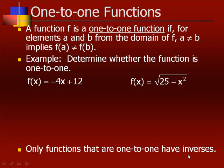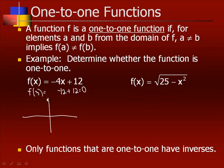For example, determine whether the function f(x) = −4x + 12 is one to one. If we pick x = 3, then f(3) = −4(3) = −12 + 12 = 0. For every one x value, there is only going to be one y value. If you think about the graph, with y-intercept 12 and slope −4, we get a line where for each x value there is exactly one y value. If we pick two different x values, we are going to get two different y values.